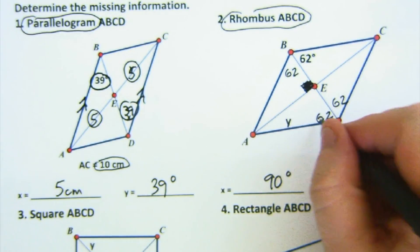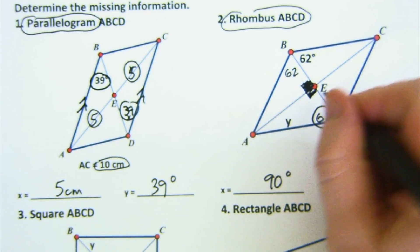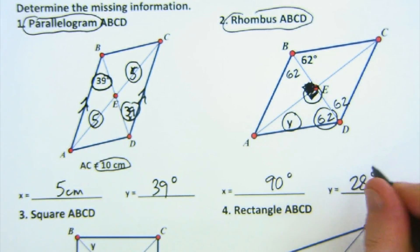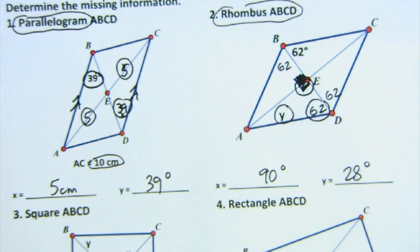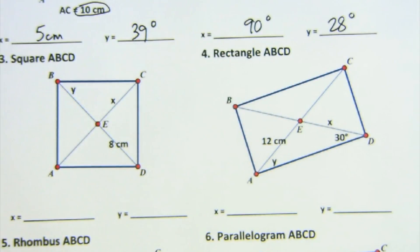And now I can find y because I know 62, I know 90, so this has to be 28 degrees that remains to form that triangle. And on and on and on it goes. More of the same.